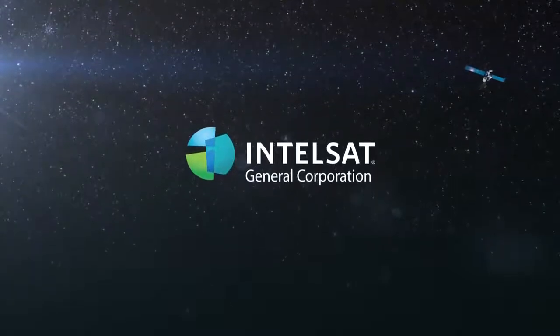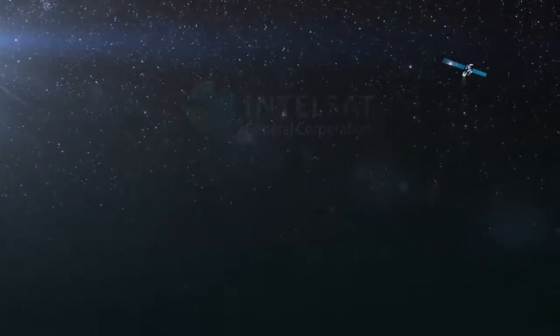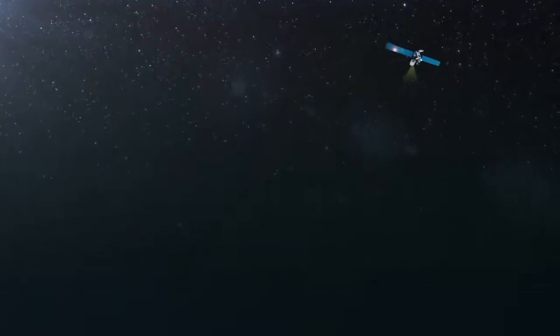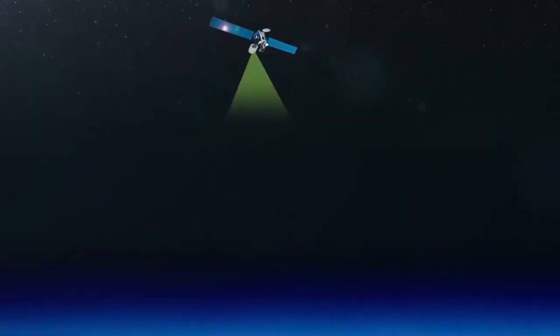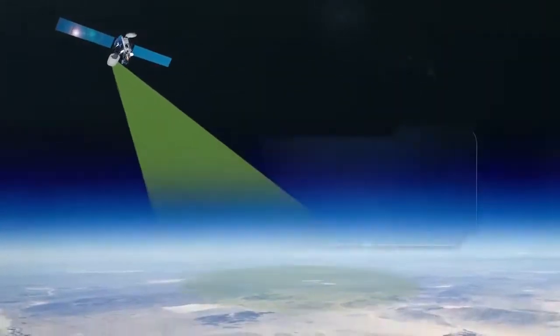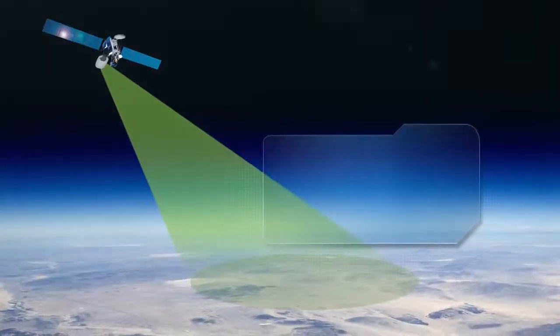22,000 miles above Earth, Intelsat satellites move through empty, quiet space, sending and receiving thousands of signals at a time over footprints that can cover entire continents and millions of people.